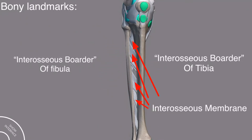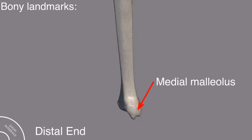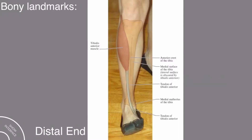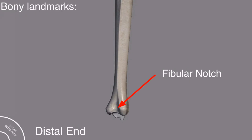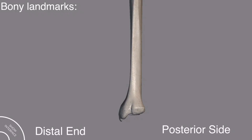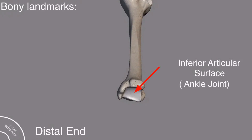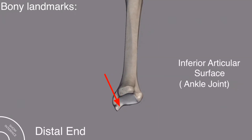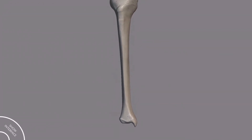On the distal end, this is the medial malleolus, which is more visible and palpable on the foot. This is the medial malleolus and this is the fibular notch, which is involved in the inferior tibiofibular joint. One more important thing on the distal end is this depression called the malleolar sulcus. This is the inferior articular surface involving the ankle joint, and this articular surface extends into the medial malleolus, called the articular facet of the medial malleolus. These are all the bony landmarks and discussion about the tibia bone.